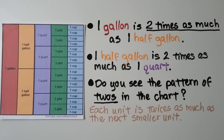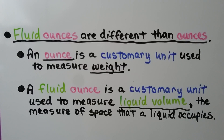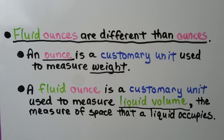Fluid ounces are different from ounces. An ounce is a customary unit used to measure weight. A fluid ounce is a customary unit used to measure liquid volume, which is the measure of space that a liquid occupies.